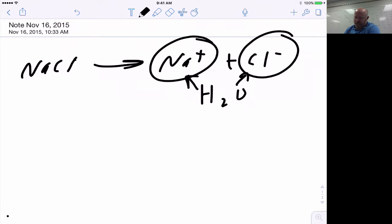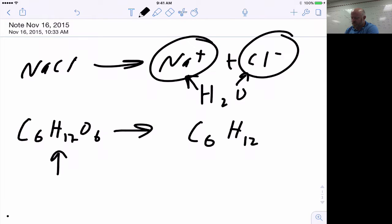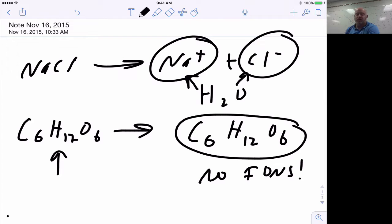With something like glucose or sugar, C6H12O6, when that dissolves in water, they just dissolve but they don't break apart. We still get C6H12O6 as a group in water. There are no ions here. Because there's no ions when put into water, we don't have any mobile charge. If there's no mobile charge, they cannot conduct electricity in solution.